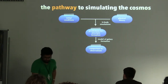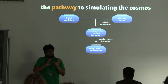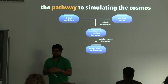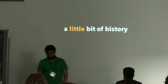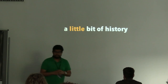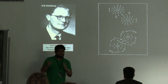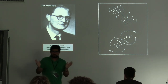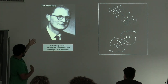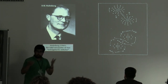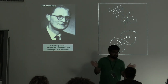It's useful to look at the history of cosmological simulations. The best place to start is with a Swedish gentleman named Erik Holmberg. He was interested in understanding what happens when two galaxies collide — starting with galaxy one (open circles) and galaxy two (closed circles), using Newton's laws to evolve the system over time.